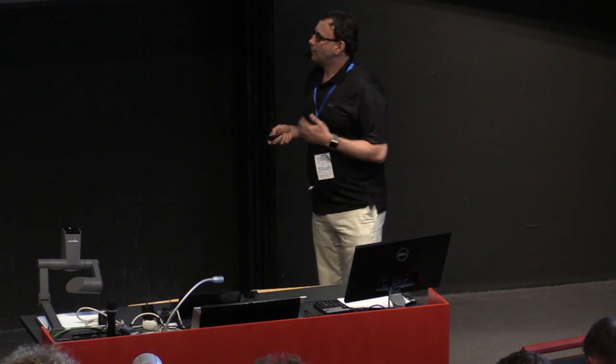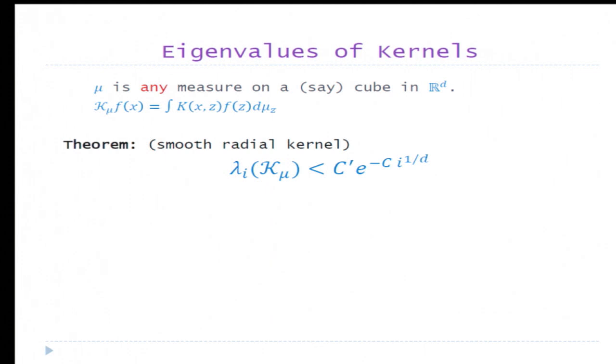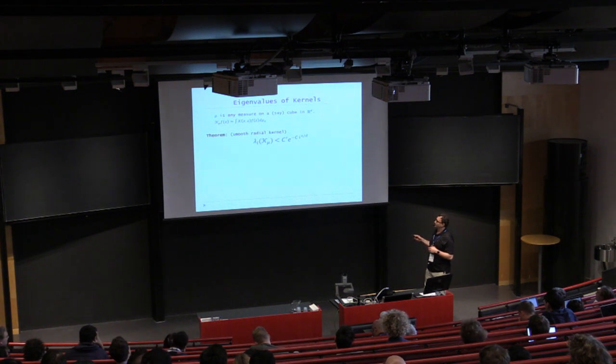What you can prove is the following. Take mu to be any measure on, say, a cube in Rd. Consider the corresponding integral operator with respect to this measure. And it turns out that for smooth radial kernels, lambda i of k mu is actually exponential in i. So it's e to the minus i to the one over d. This is the power of i. And as you can see, this is some sort of exponential decay. And at least in small dimension when d is not too large, it decays rather quickly.